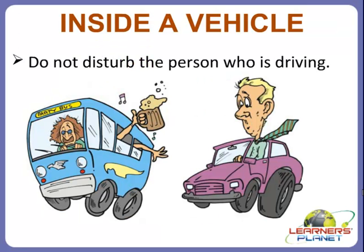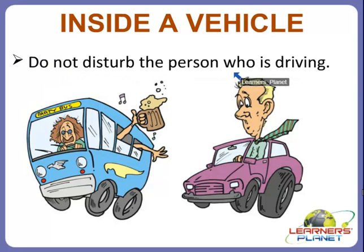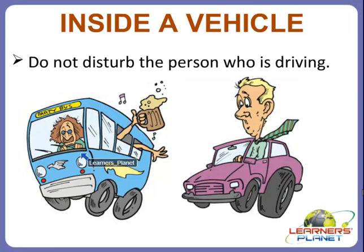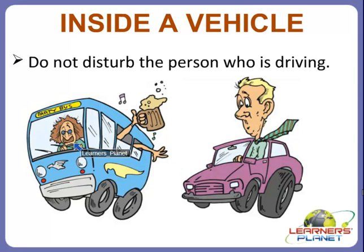Now we will study about some safety rules when we are sitting inside a vehicle. The first rule is that you should not disturb the person who is driving. We can see here that there is a bus driver who is very disturbed because the children sitting inside are disturbing him — they are jumping and playing. That is a very bad habit and can cause harm to the children sitting inside the vehicle.